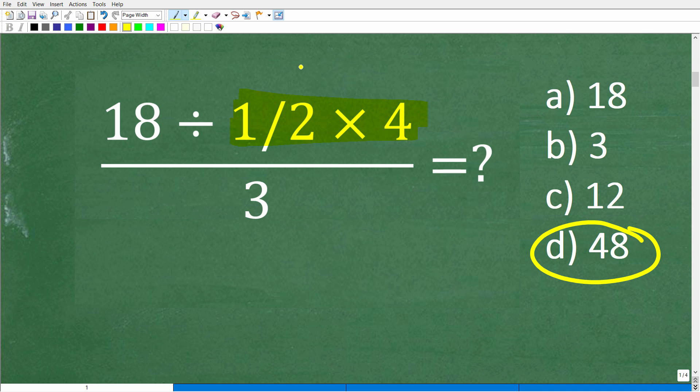Now I have 18 divided by 2, and that's 9. So now I have a 9 up in the numerator and a 3 down in the denominator. So I have 9 over 3, and 9 divided by 3 is 3.